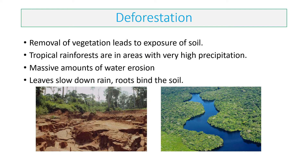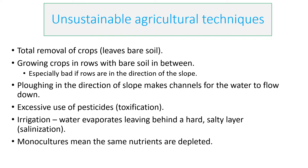Deforestation is when exposed soil results from the removal of vegetation. High levels of precipitation mean there is a lot of water erosion, and this causes minerals to leave the area making the soil very unfertilized. Because the trees have been chopped down, leaves normally slow down the rain and the roots bind the soil, so removing the trees has a big effect on soil quality very quickly.